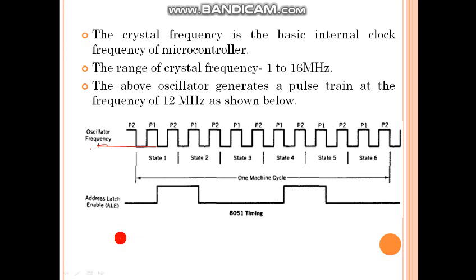You can see state 1, state 2, state 3 up to state 6. State 1 to state 6 complete one machine cycle. This machine cycle is applied to address latch enable.